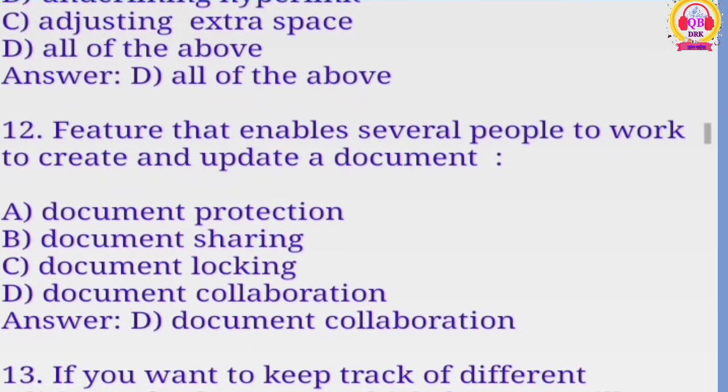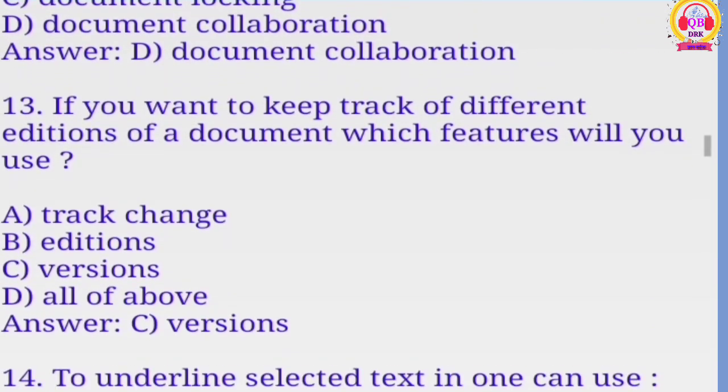Feature that enables several people to work to create and update a document. Options ABCD. Correct option is D, that means document collaboration. If you want to keep track of different editions of a document which features will you use? Versions, C is the correct option.